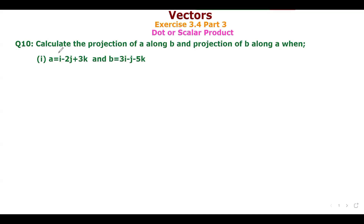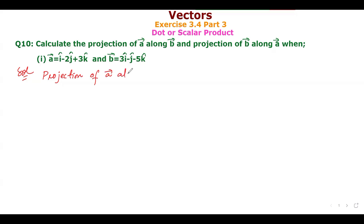Question number 10 asks us to calculate the projection of vector A along vector B, and the projection of B along vector A. Vector A = i - 2j + 3k and vector B = 3i - j - 5k. First, let us find the projection of vector A along B. The formula is A·B divided by |B|.